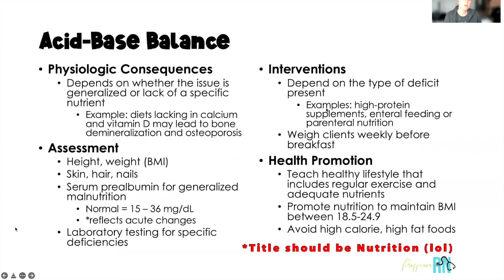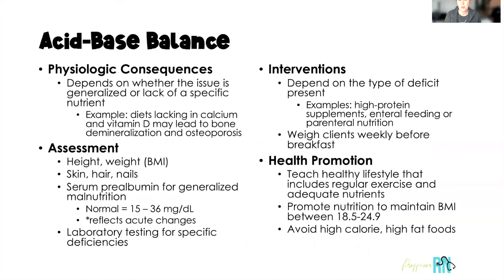The physiologic consequences of altered nutrition will depend on whether the issue is generalized or whether the client is lacking a specific nutrient. A specific nutrient deficit may be easier to overcome than generalized malnutrition. A great example is clients whose diets lack calcium and vitamin D — this often leads, especially as we age, to bone demineralization and osteoporosis.